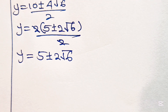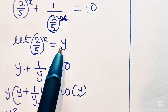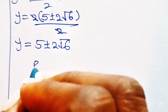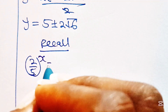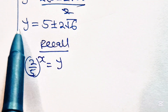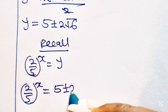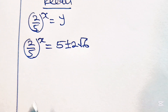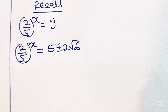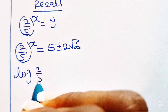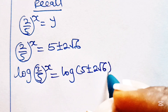But we are looking for x, not y. Recall that we let 2 over 5 raised to the power of x equal y. So substituting back, we have 2 over 5 to the power of x equals 5 plus or minus 2 root 6. Because what we are looking for is the power, we need to introduce log to both sides of the equation. So we write: log of 2 over 5 to the power of x equals log of 5 plus or minus 2 root 6.